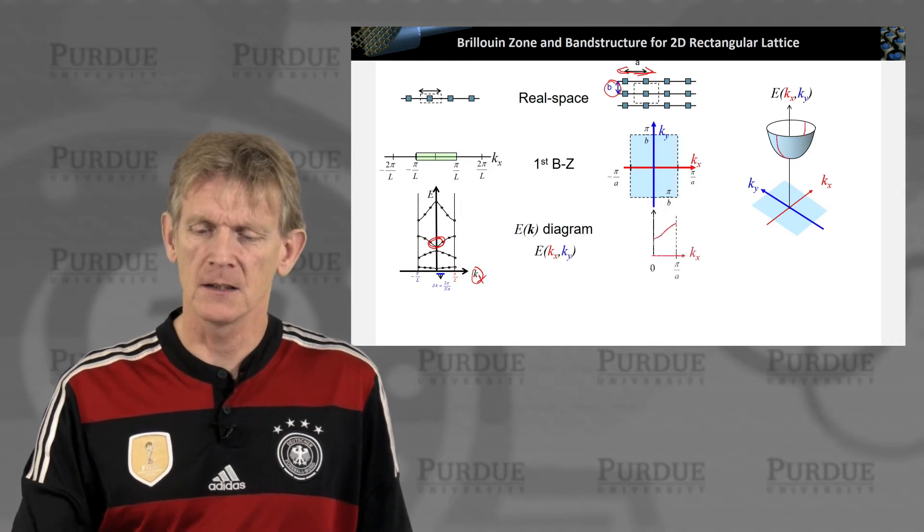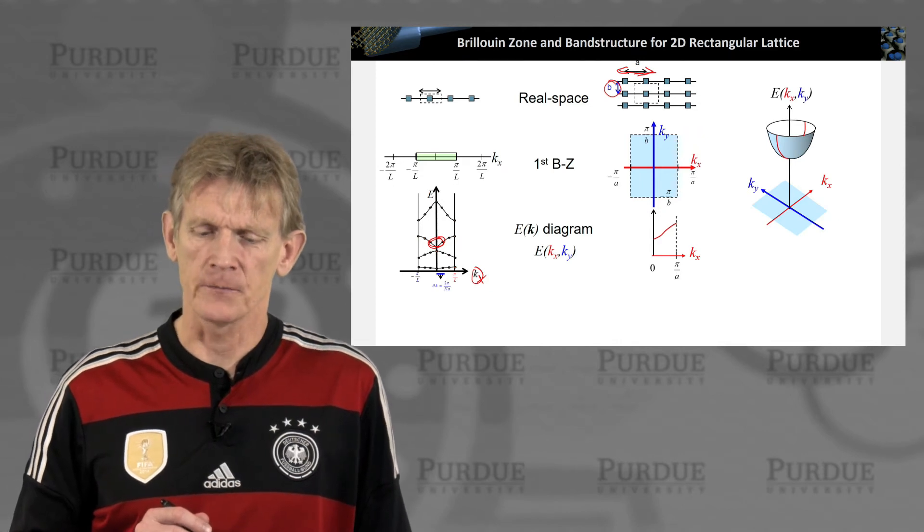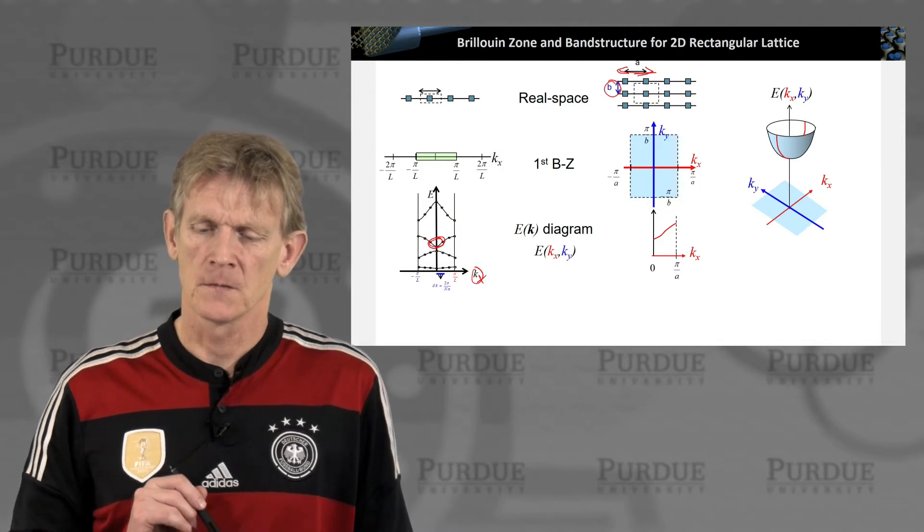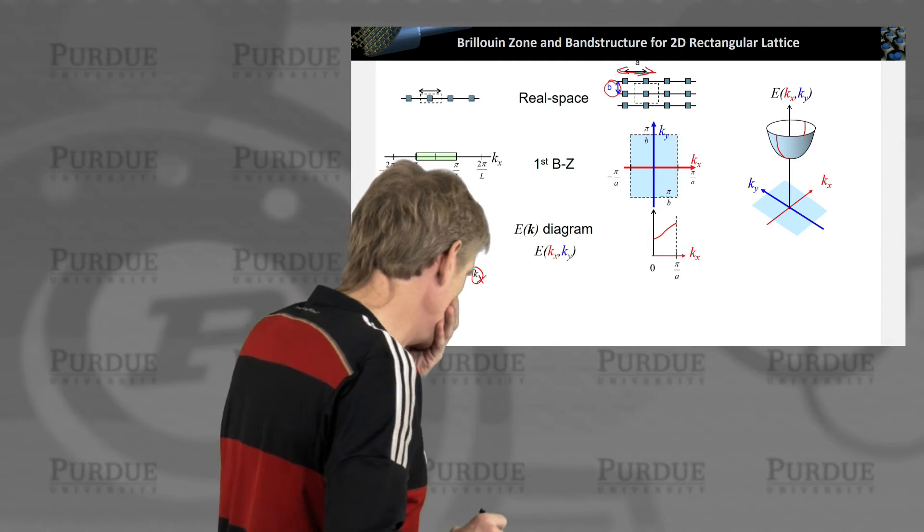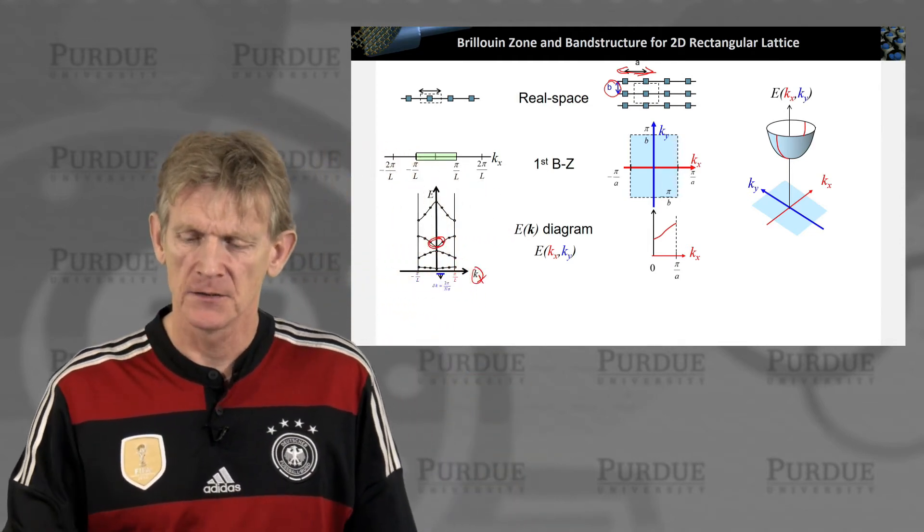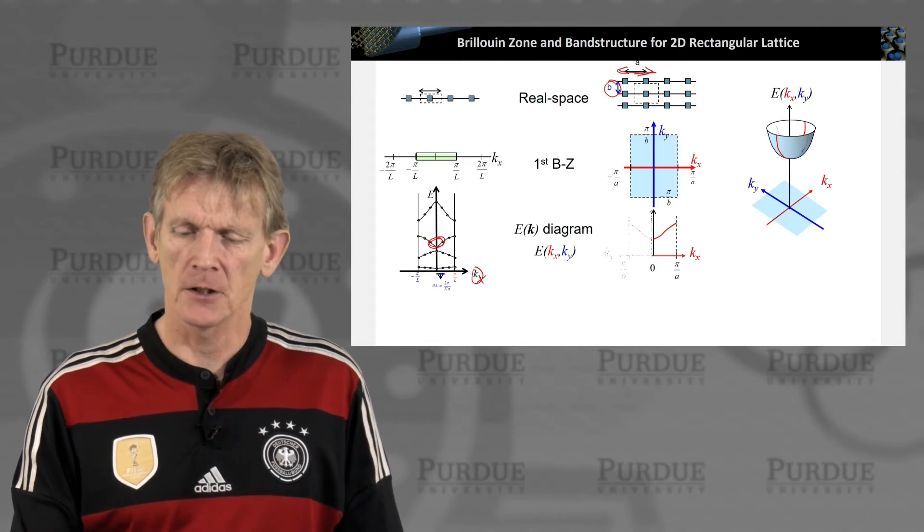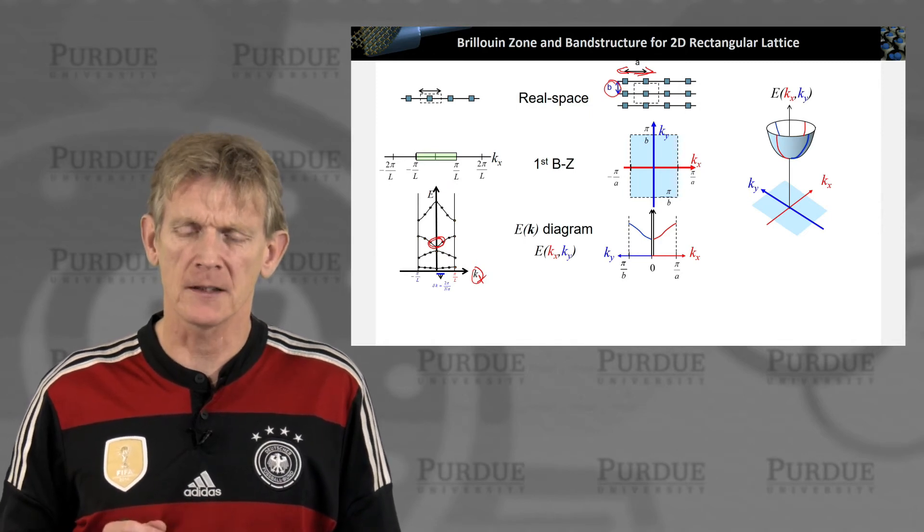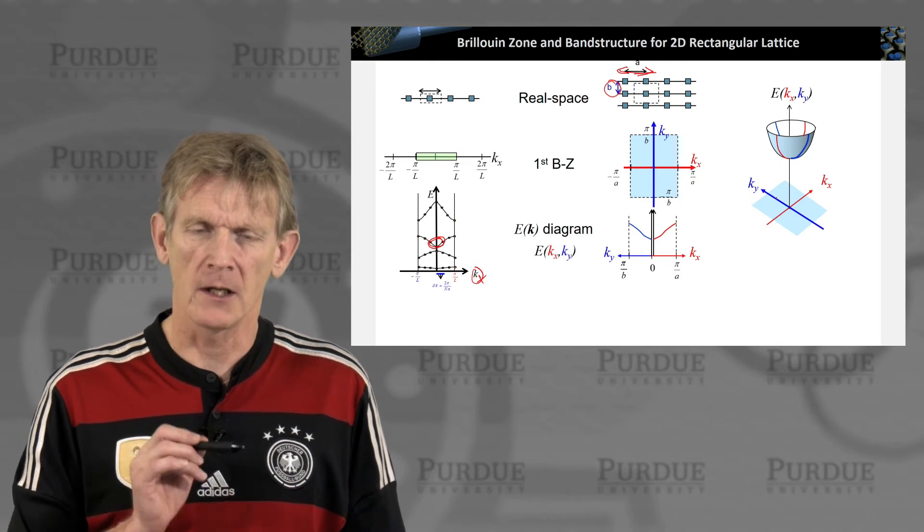What's often done is you can take a cut in the Kx direction, shown here as red, and you plot one of these cuts in one direction. You can also cut in the other direction, and you keep one of the axes and plot it in Ky.